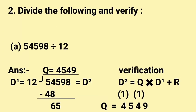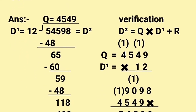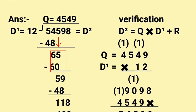Second part is divide the following and verify. A part is 54598 divided by 12. Let's start. We know 12 fours are 48. We write 48 under 54. So 54 minus 48 gives us 6. Now 5 comes down with 6, so it becomes 65. Now 12 fives are 60. Now 65 minus 60 gives us 5. 9 comes down with 5, it becomes 59. Now 12 fours are 48. Now 59 minus 48 gives us 11.